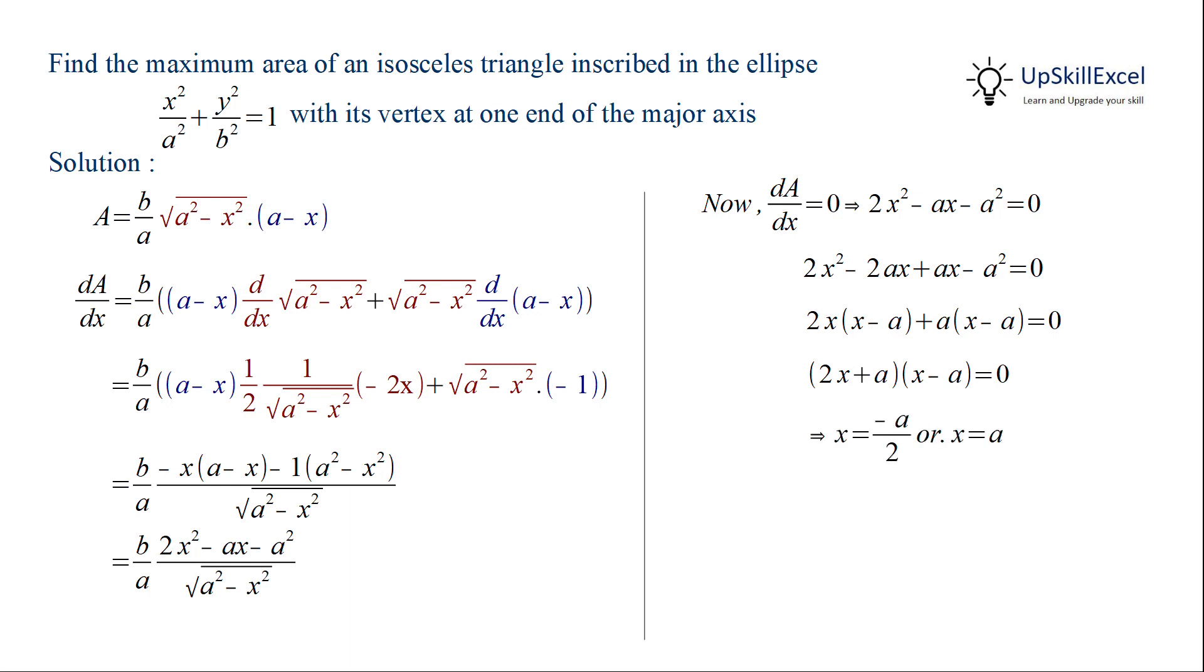This implies that x = -a/2 or x = a. Now x equal to a is not possible otherwise all the three points will be same. Hence x = -a/2 is the only possible solution.